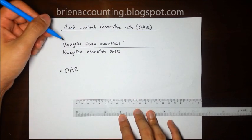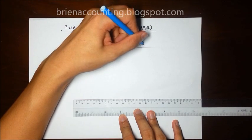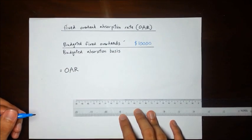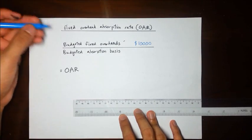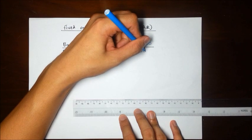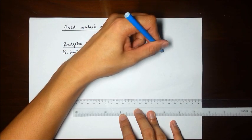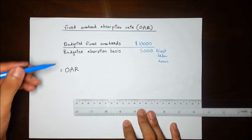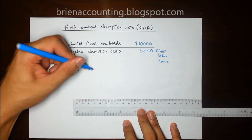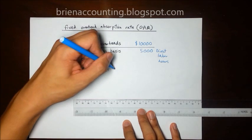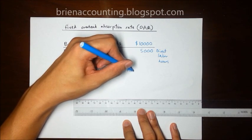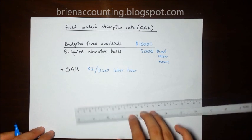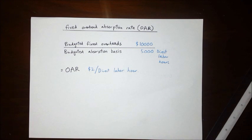Let's say my budgeted fixed overheads is $10,000. I am going to use labor hours as my absorption basis. So I am going to write here 5,000 direct labor hours. This will give me an OAR of $2 per direct labor hour.